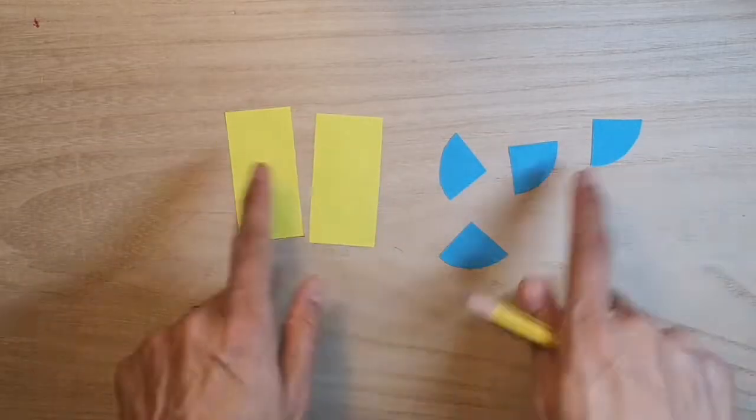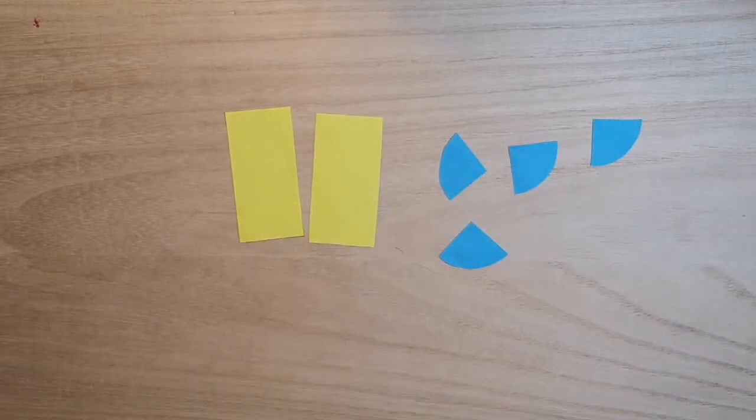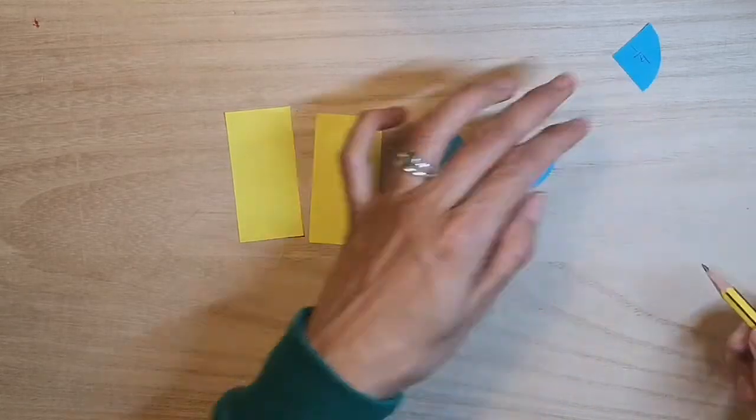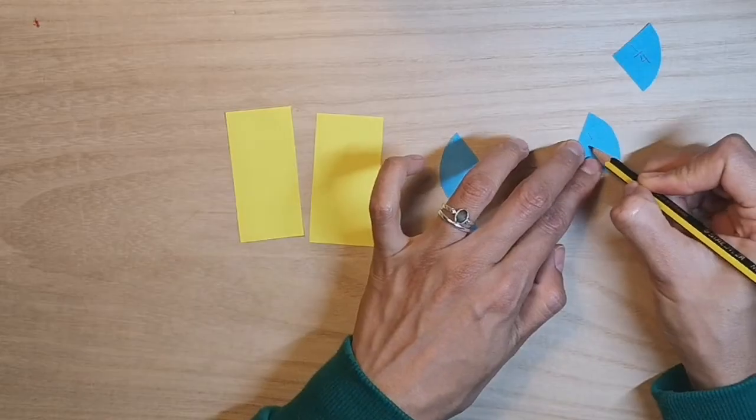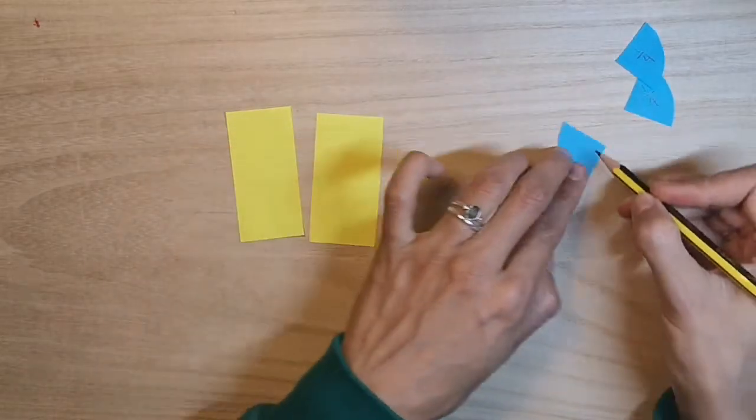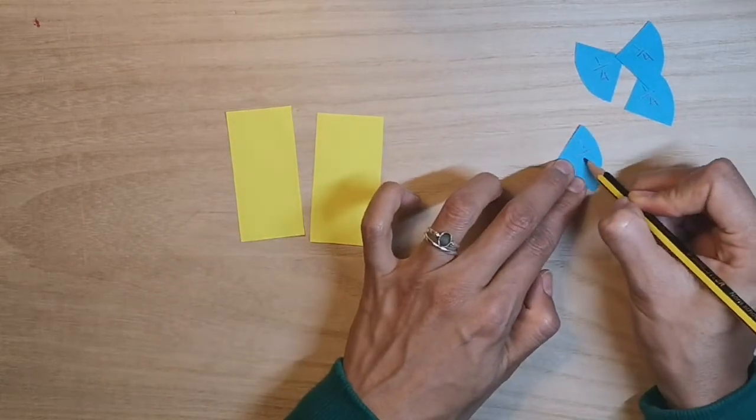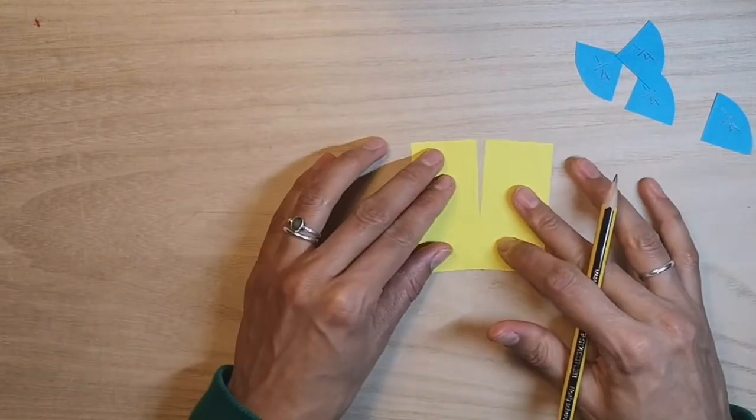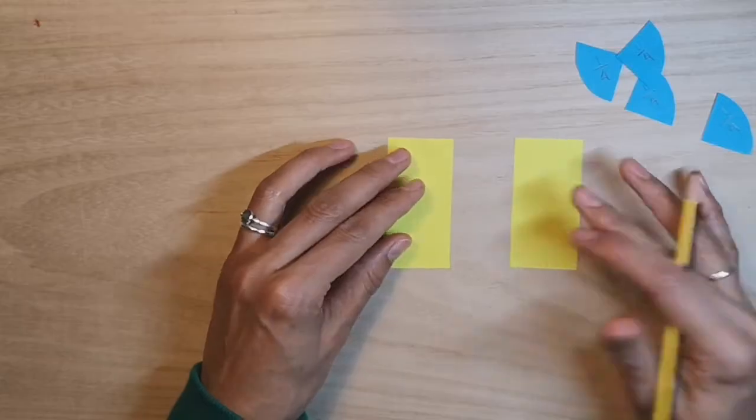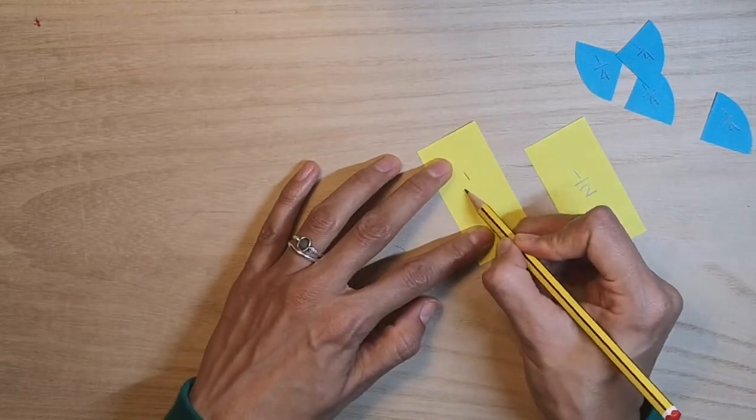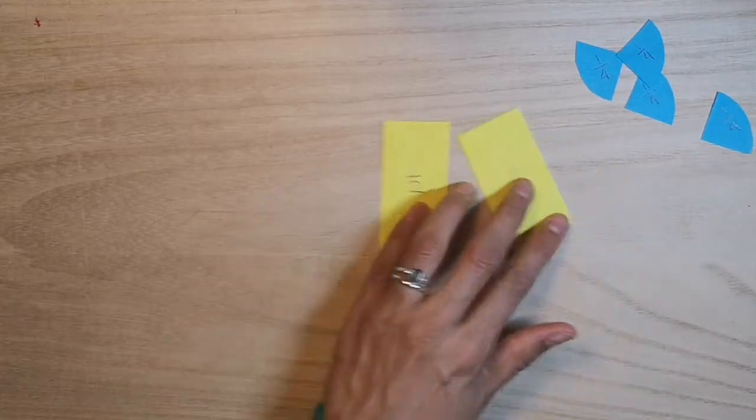I'm now going to label the back of these so I know what fractions I've cut different things into. Quarters, one quarter, this is another quarter, this is another quarter and this is another quarter. And this was a whole square that I cut into one half and another half.